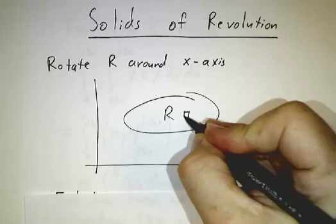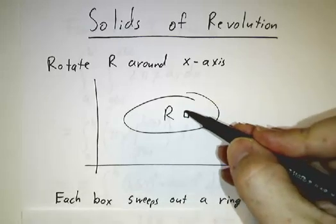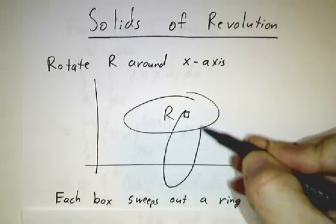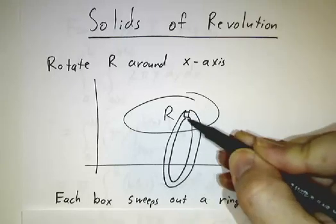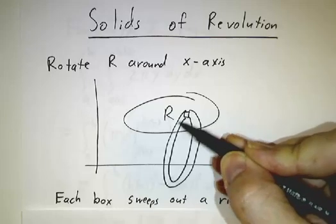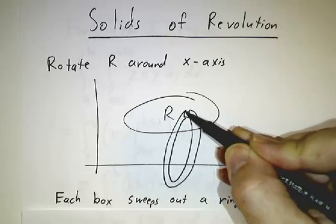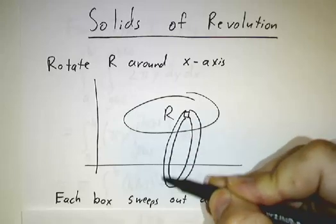So we're going to take a little box, and if we spin the box all the way around the x-axis, we're going to get this little ring. And the ring, if you want to figure out the volume of the ring, it's the cross-sectional area times how far it goes around.